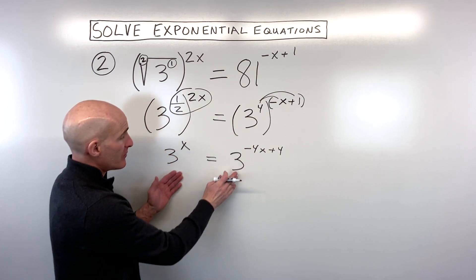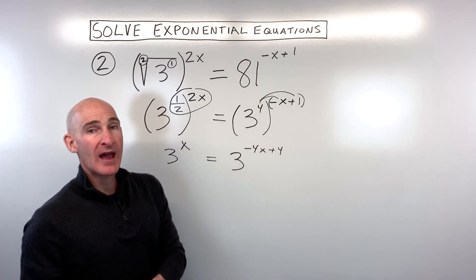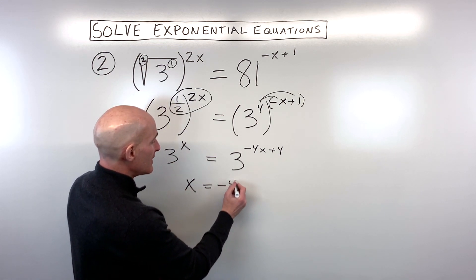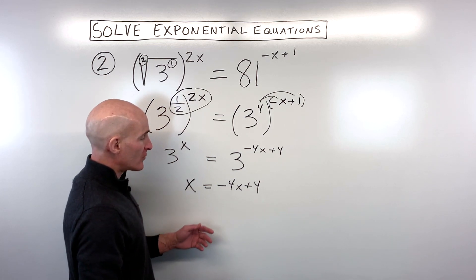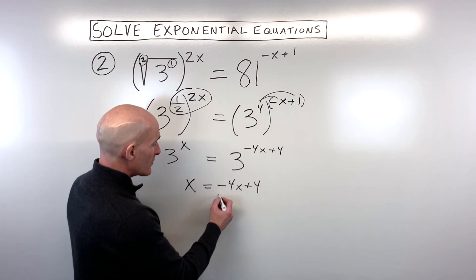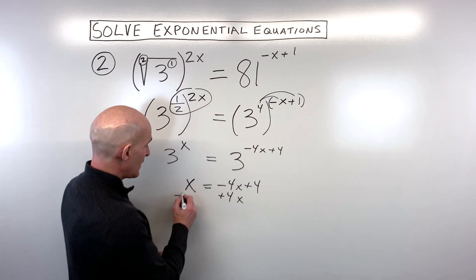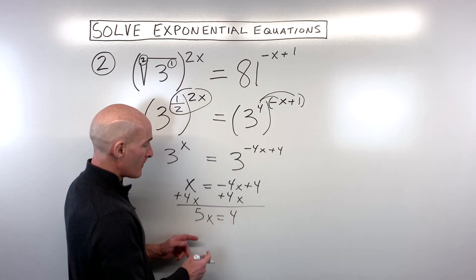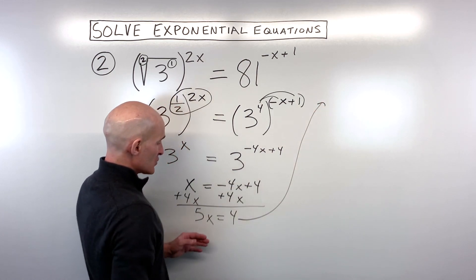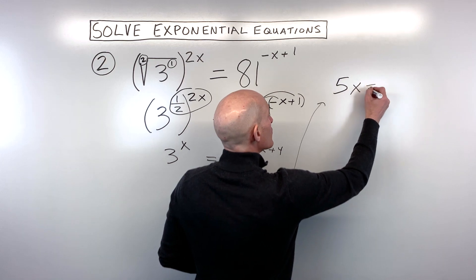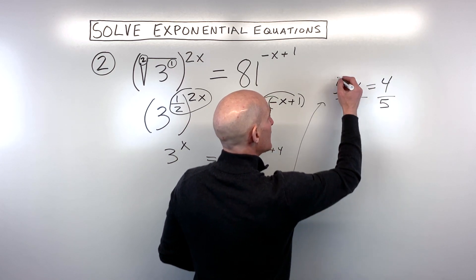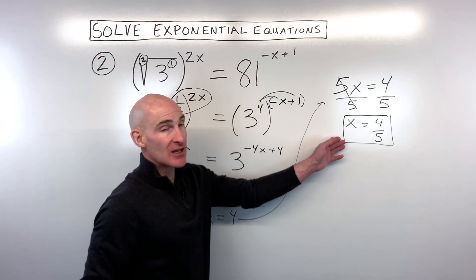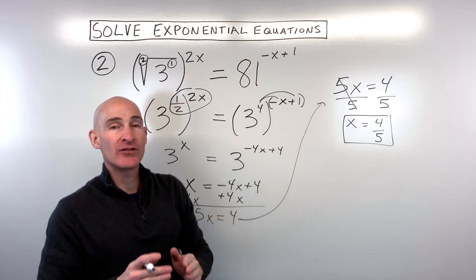This comes out to three to the negative four x plus four. Now the bases are the same — both base three — so we set the exponents equal: x equals negative four x plus four. Variables on one side, numbers on the other — add four x to both sides and you get five x equals four. Divide both sides by five and x comes out to four fifths. You can check by substituting four fifths back in for x to verify both sides match.